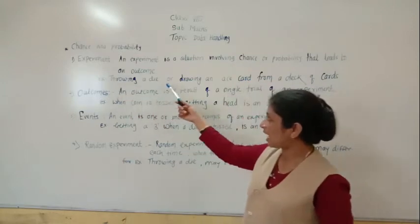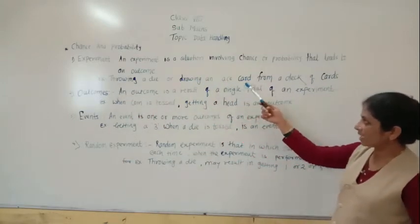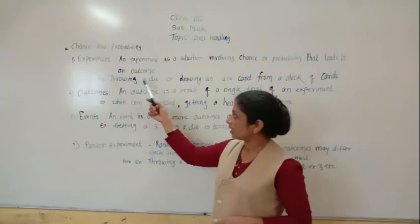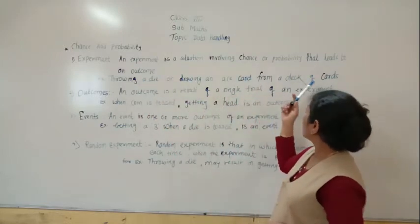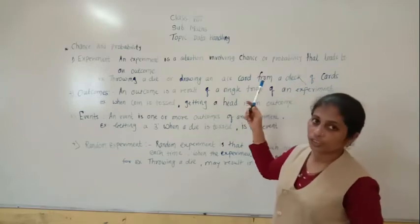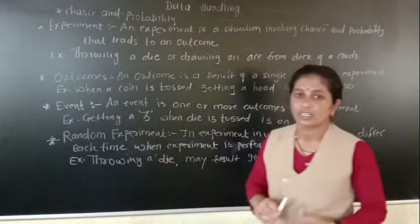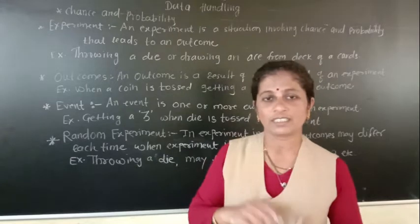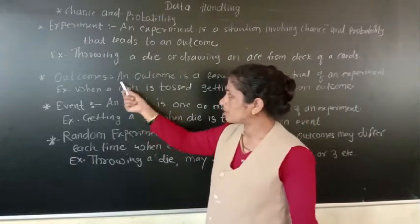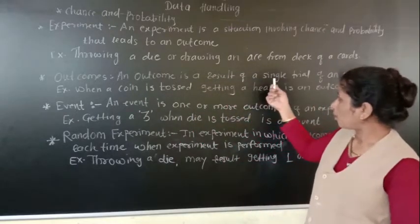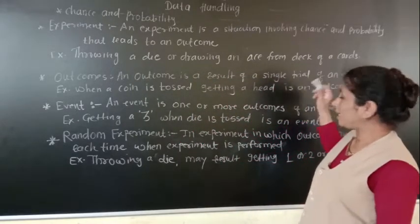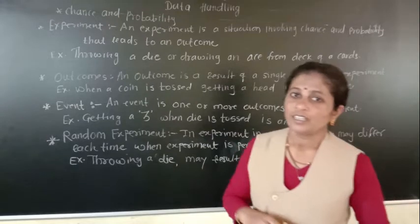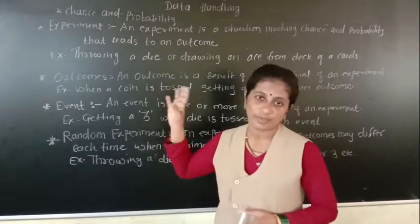Next, what is meant by outcomes? When you do some experiment, whatever result you get, that is the outcome. An outcome is a result of a single trial of an experiment. So when you do any experiment in a single trial, whatever you get — that result is the outcome of that experiment.